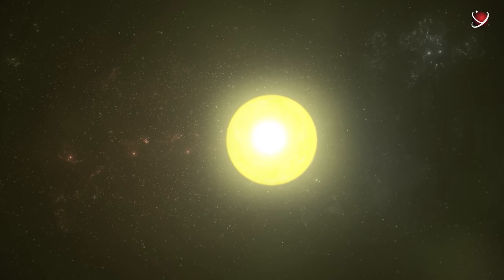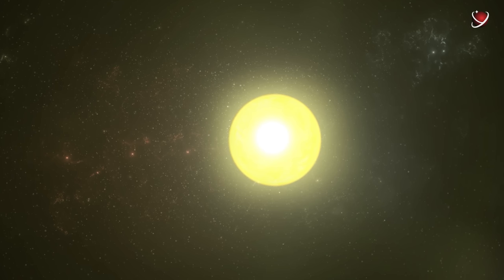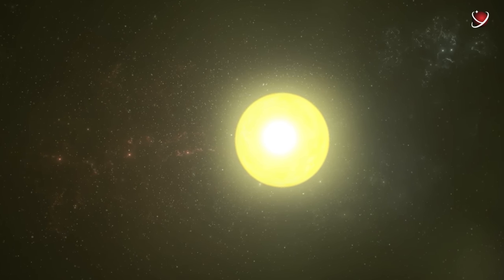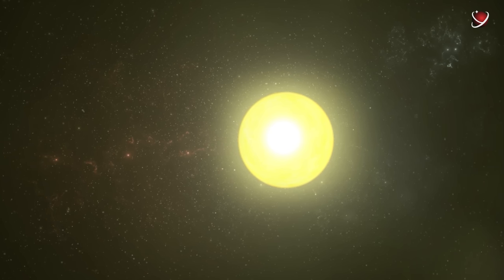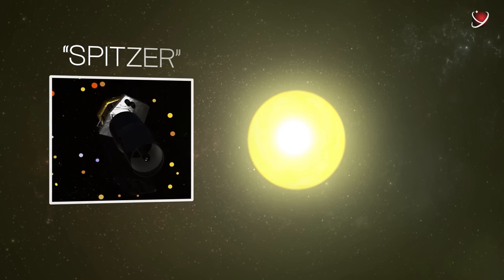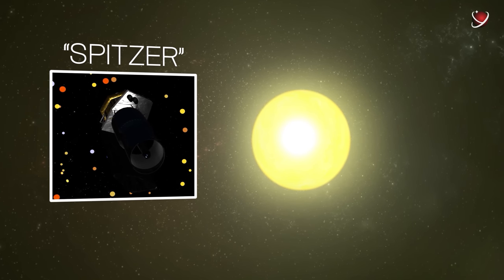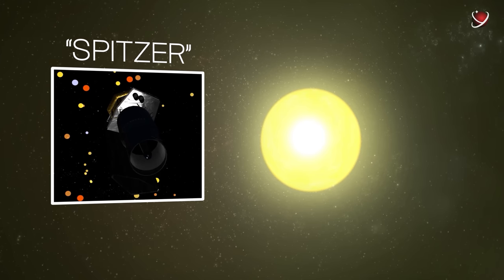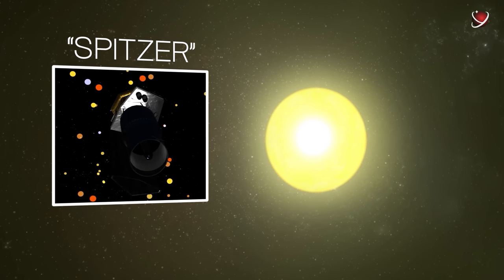Scientists encountered the same problem as with AU Microscopii. Like almost all young stars, HIP 67522 was very active and covered in spots, making the transit method of exoplanet detection difficult. Therefore, to eliminate the possibility of error, the researchers had to use additional data from the Spitzer Infrared Observatory.